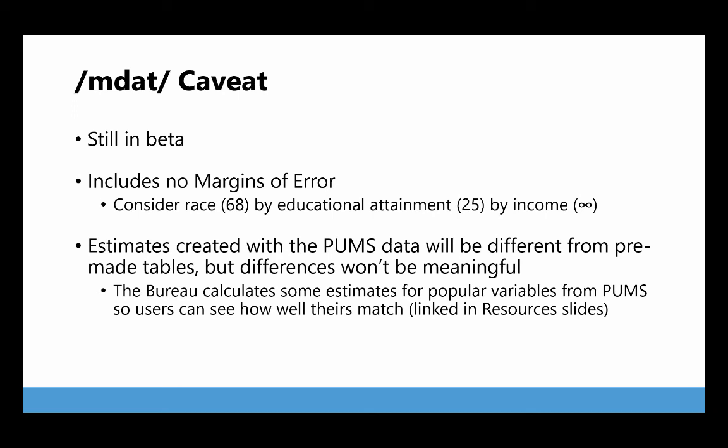The Census Bureau says that estimates created with the PUMS data will be different from the same variables in a pre-made table, because they have a different universe - there's a smaller number of responses in the public use microdata than in the full dataset. But the Census Bureau says those differences won't be meaningful. The Census Bureau has also calculated some estimates with the PUMS data so that researchers can compare their own estimates with those, and that's linked in the resources slides.